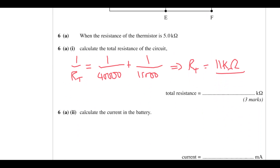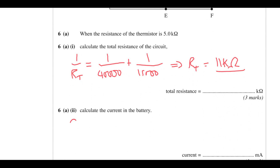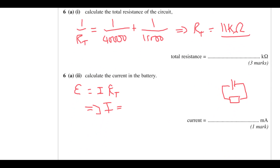Calculate the current in the battery. Once you've applied resistor rules you've turned it into a simple series circuit, so the current equals EMF divided by total resistance — that's 12 divided by 10,909 — giving 1.1 times 10 to the minus 3 amps, or just 1.1 milliamps.